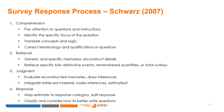Second, retrieval describes the recalling of generic and specific memories and reconstructing details. To help, you can use questions that help retrieve specific bits, distinctive events, remembered quantities, or total outlays. In judgment, individuals evaluate these reconstructed memories, draw inferences and estimates, and integrate retrieved material.